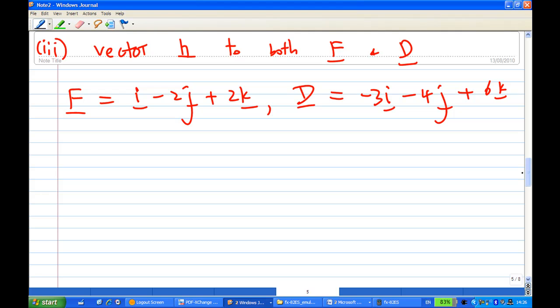Last part, find a vector perpendicular to both F and D. One possibility is to take the cross product of F and D. This vector will be automatically perpendicular to both F and D.